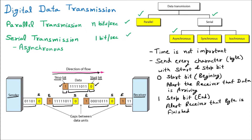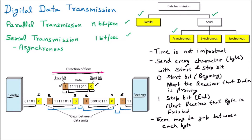One more important thing: there may be a gap between each byte. Every byte travels with a gap in between. We can see in the diagram: one byte goes, then there is a gap, then another byte, another gap, then another byte, and so on. These gaps between data units are visible in the diagram — the dotted areas represent the gaps.